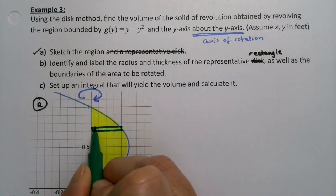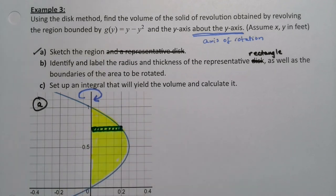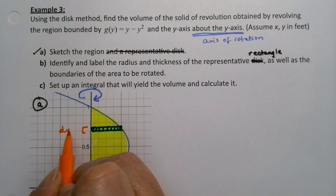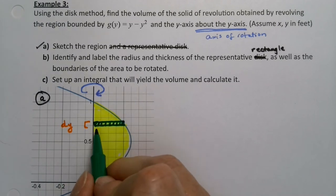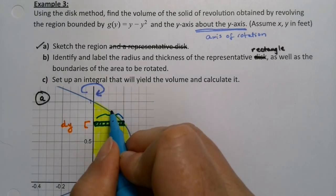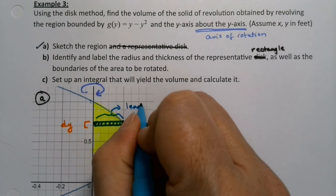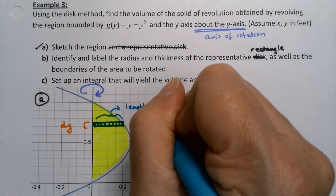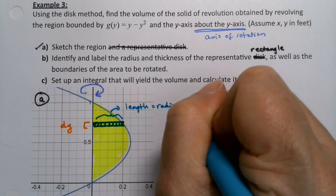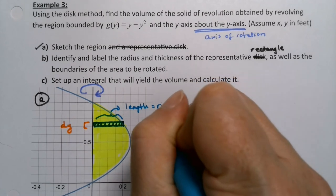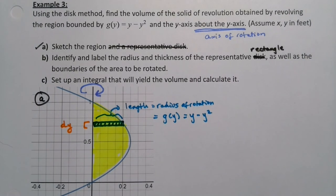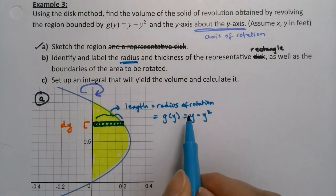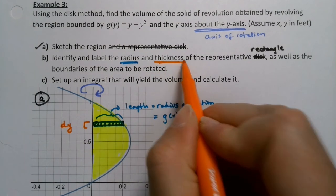I have a rectangle like this. It has a thickness that's dy because we're rotating around the y-axis. The thickness will be dy because it has to be perpendicular to that y-axis for the disk method. Now the radius of that disk, the length of that rectangle, is the radius of rotation, which is equal to g(y), which is y minus y squared. I've got my radius labeled, there's my radius of rotation. I have my thickness labeled dy.